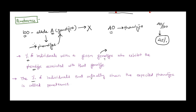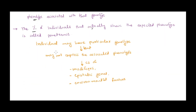Now there can be various reasons why these individuals are not showing the associated phenotype. All of them would have that particular genotype, but they will not express the associated phenotype — say for example in the case of an epistatic gene, which we talked about in the last video, or due to some environmental factors these genes are not able to express. So let's take an example of this.